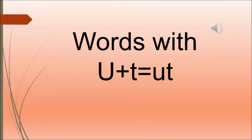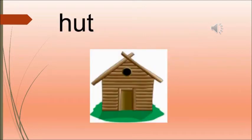We will be doing words with 'ut'. The sound of U is 'a', and the sound of T is 'ta'. Together it becomes 'at'. The first word is hut — ha, at, hut. Hut is a small house which is basically made of mud and wood.